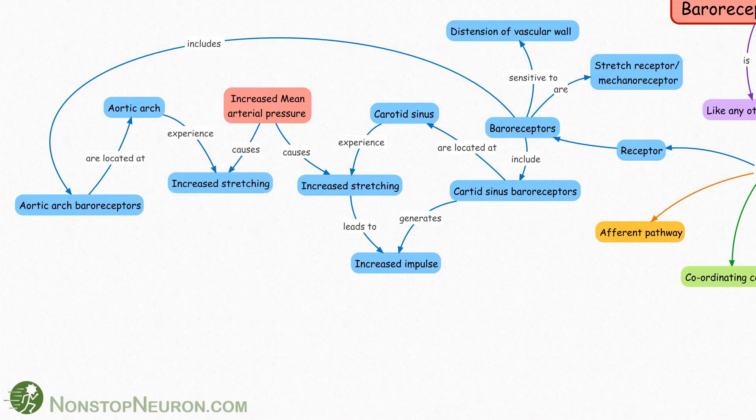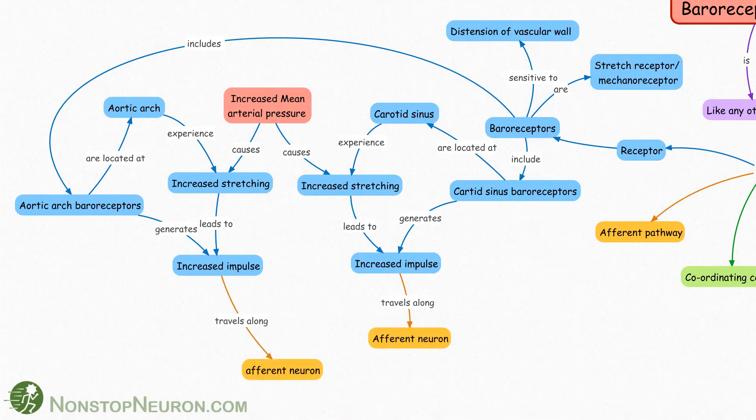Increased pressure causes increased stretching which increases firing from baroreceptors. Now these impulses travel along afferent neurons. Neurons from carotid baroreceptors are located in glossopharyngeal nerve and those from aortic baroreceptors are located in vagus nerve.